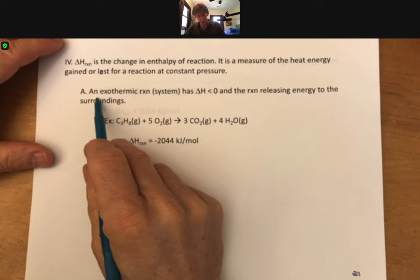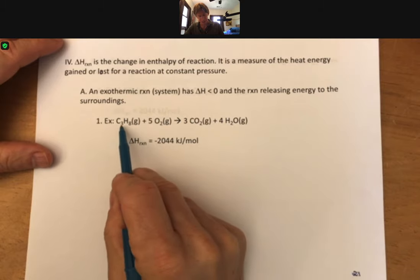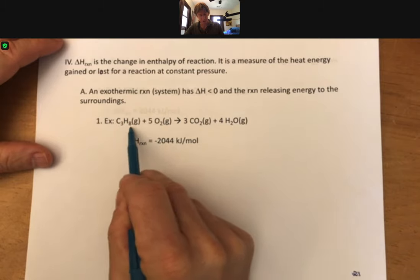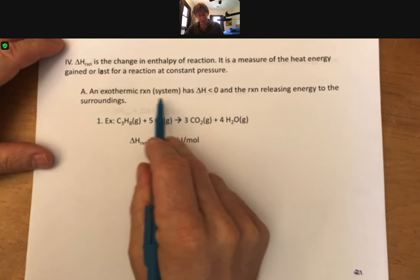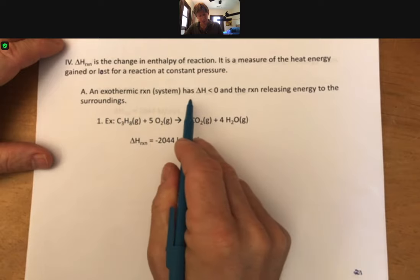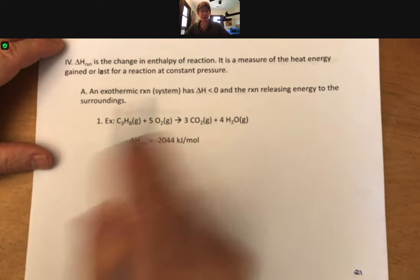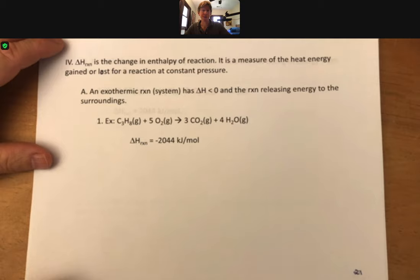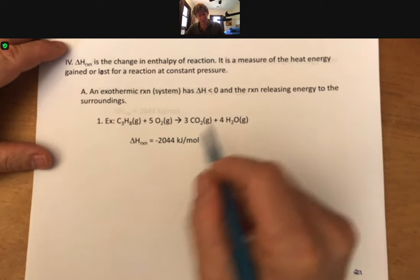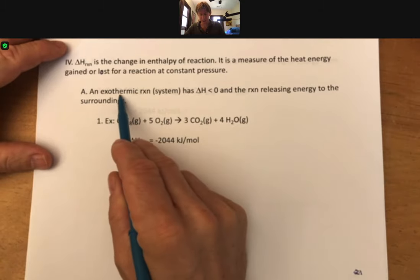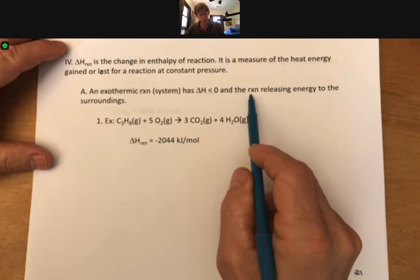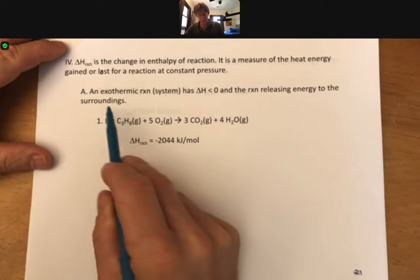Now this is an exothermic reaction and it's the burning or combustion of propane. We've seen this one before. And the exothermic reaction has delta H less than zero. That's new information. The sign of delta H tells you whether a reaction is exothermic or endothermic, and this is an exothermic reaction. It is heat exiting with the reaction releasing energy to the surroundings.